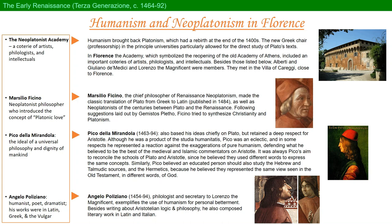Humanism brought back Platonism, which had a rebirth at the end of the 1400s. The new establishment of a Greek chair in Italy's principal universities particularly allowed for the direct study of Plato's texts. The Greek refugees coming to Italy during the Ottoman conquest of Greek territories, notably Constantinople, brought with them a first-hand acquaintance with the Greek language. In Florence, the establishment of a Neoplatonic Academy symbolized another rebirth — that of the classical antique Academy of Athens. It included an important coterie of artists, philologists, and intellectuals. Besides those listed, Alberti, Giuliano de' Medici, and Lorenzo the Magnificent were members. They met in the villa of Carreggi, close to Florence.